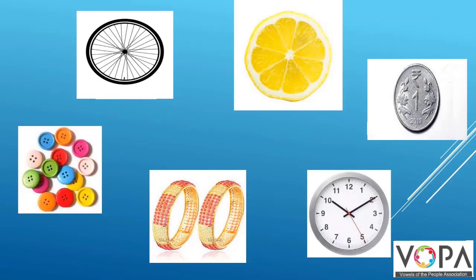Hello dear friends. You can see various pictures on the screen. What is common between them? Yes, their shape. All these objects have a circular shape. Circle is one of the most common shapes in this universe.